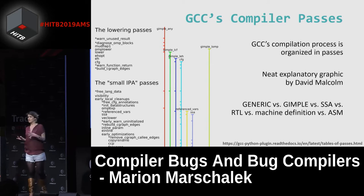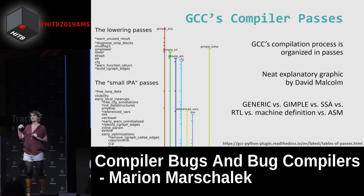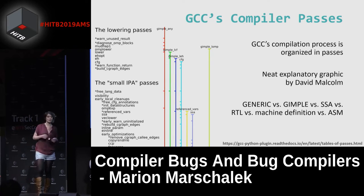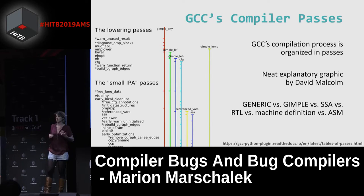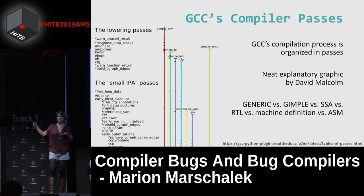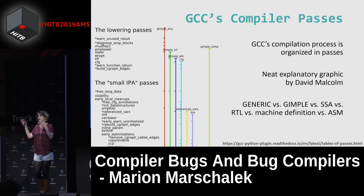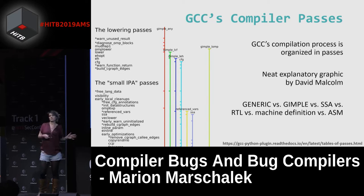For example, if you want to change something about a given register used in the outputs — say RBX as an x86 register — you need to locate where in your compilation step this register is present. If you're at the beginning of the RTL passes, your representation is still very generic and independent of any machine architecture. Only throughout the different RTL passes will the generic representation be lowered to a more machine-specific one. Somewhere in those passes you'll find the register allocator, and after it you'll typically have access to the different registers.